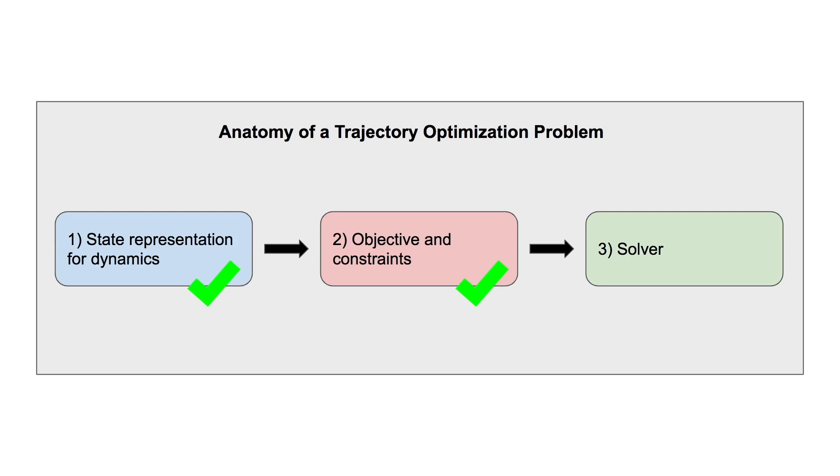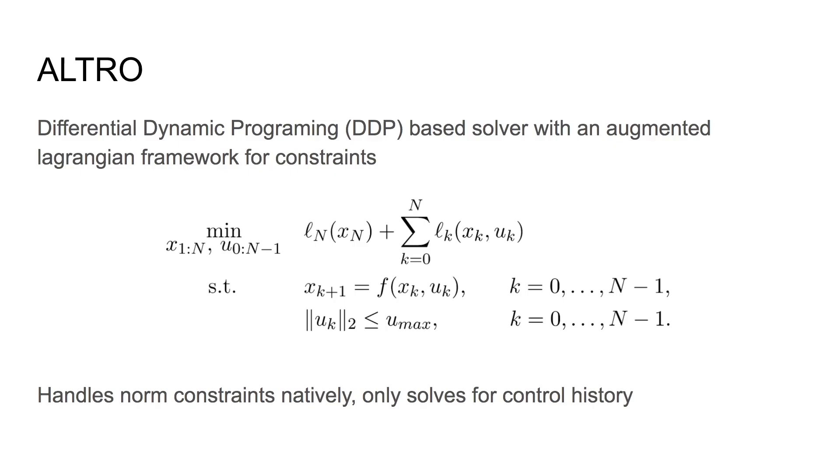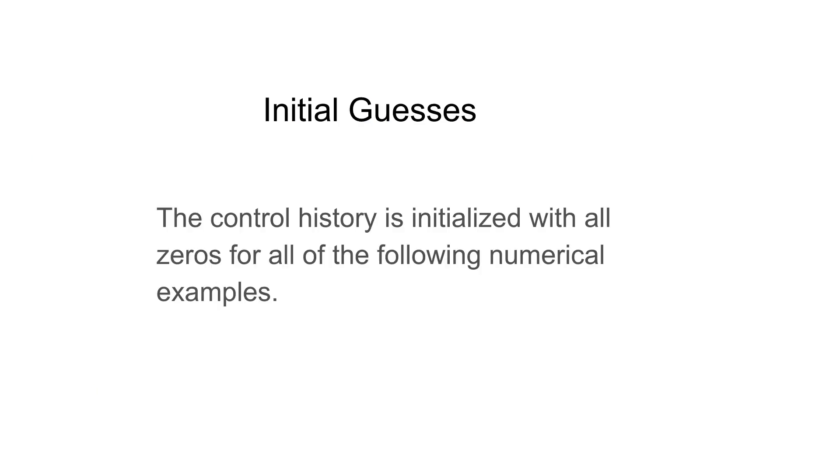The sole constraint for this problem is that the three-dimensional thrust vector lies within the max thrust constraint. This now brings us to the last component of this trajectory optimization problem, the solver. This problem was solved using the Augmented Lagrangian Trajectory Optimization Solver, or ALTRO. This solver is based on differential dynamic programming and can handle the max thrust norm constraint natively without having to form linear approximations at every iteration. This solver is able to exploit the Markov structure in the dynamics to only solve for the control variables and enforce the dynamics constraints implicitly during a forward rollout. A significant contribution of this formulation is that for each of the following solves, the GTO to geo transfer was instantiated with a guess of all zeros. This means that no a priori information about a solution was used to warm start the solver in any way.